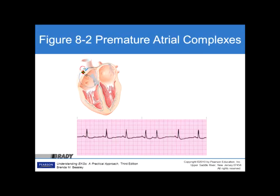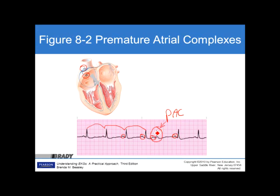Looking at the pacemaker sites, the normal beat comes from the SA node. In a PAC, an alternate site fires and adds its contribution. These beats are nice and rhythmic, but the PAC is not. Notice the P wave in the PAC is different than the P wave in the rest of the beats — that's our premature atrial complex. These can be perfused sometimes, and sometimes they won't produce a pulse. The more PACs a patient has that are not perfused, the greater the chance of alteration in hemodynamics or blood pressure.